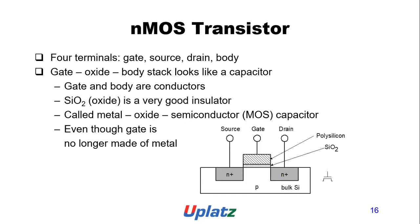The NMOS transistor has four terminals: gate, source, drain, and body. The gate oxide and body stack looks like a capacitor — gate and body are conductors, and the SiO2 oxide is a very good insulator, forming the metal oxide semiconductor capacitor, even though the gate is no longer made of metal. The schematic and symbol are shown.